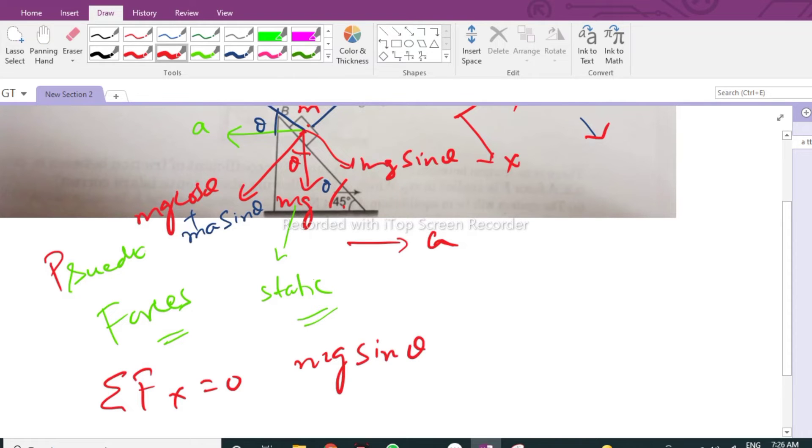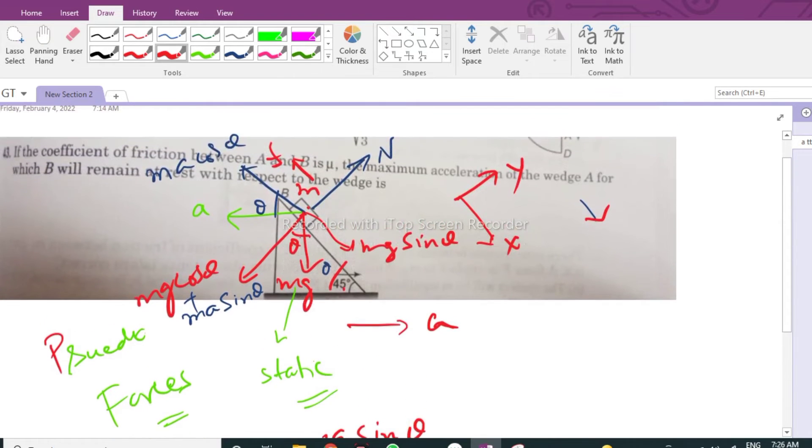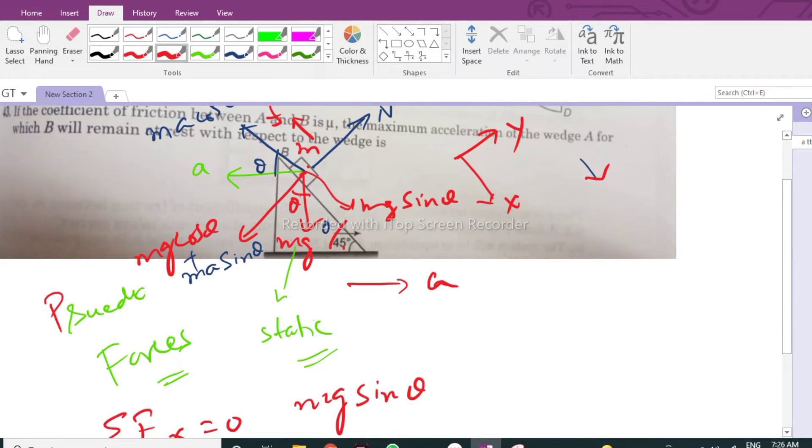So mg sine theta minus ma cosine theta minus f equals zero. This is your equation one.